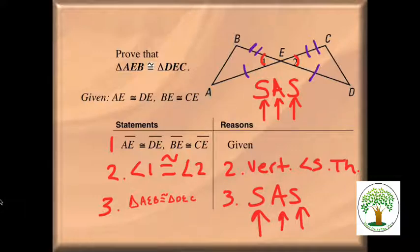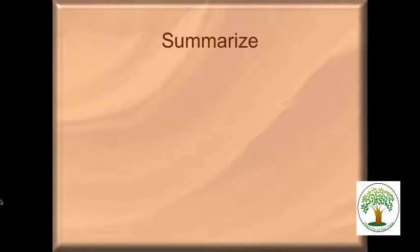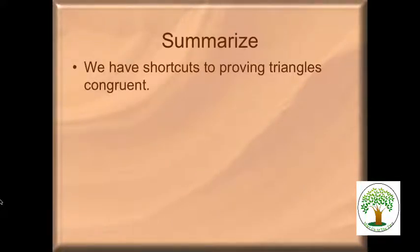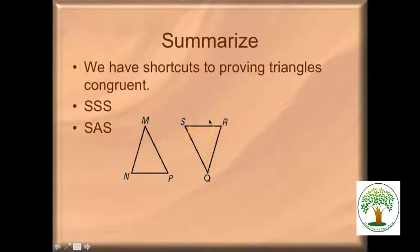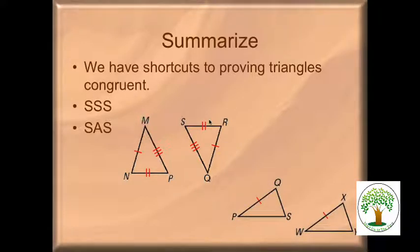In summary, we have two shortcuts. Side, side, side: three sides of one triangle congruent to three sides of another means the triangles are congruent. Side, angle, side: two sides and the included angle congruent — the angle must be between the two sides, otherwise it doesn't work. You need to have all required pieces stated in your proof before you can apply SSS or SAS at the end.